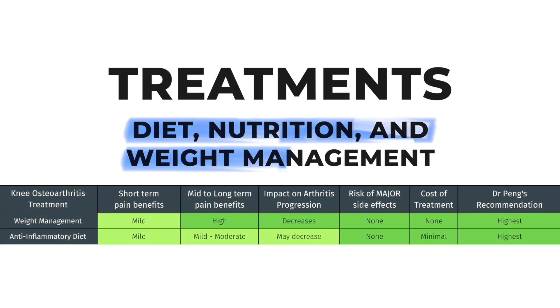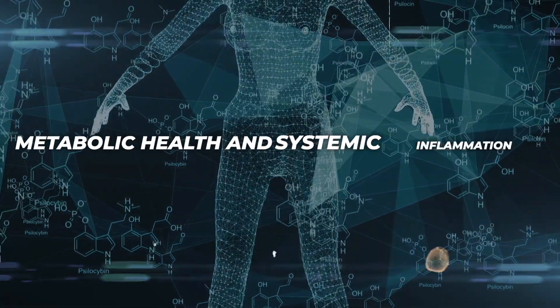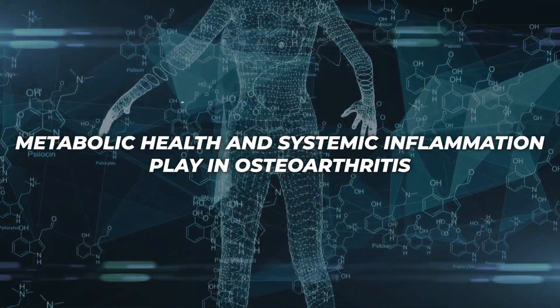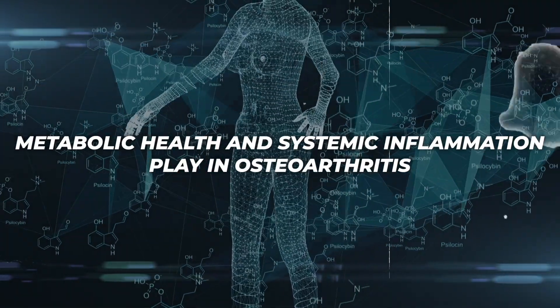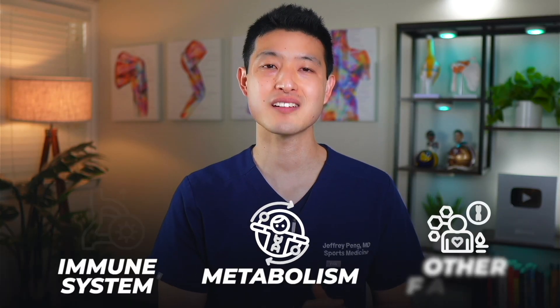Now let's transition to talking about how diet, nutrition, and weight affect arthritis. Recent research highlights the critical role that metabolic health and systemic inflammation play in osteoarthritis. Interestingly, this inflammation isn't limited to the joints alone — it involves a complex interaction between our immune system, metabolism, and other factors.